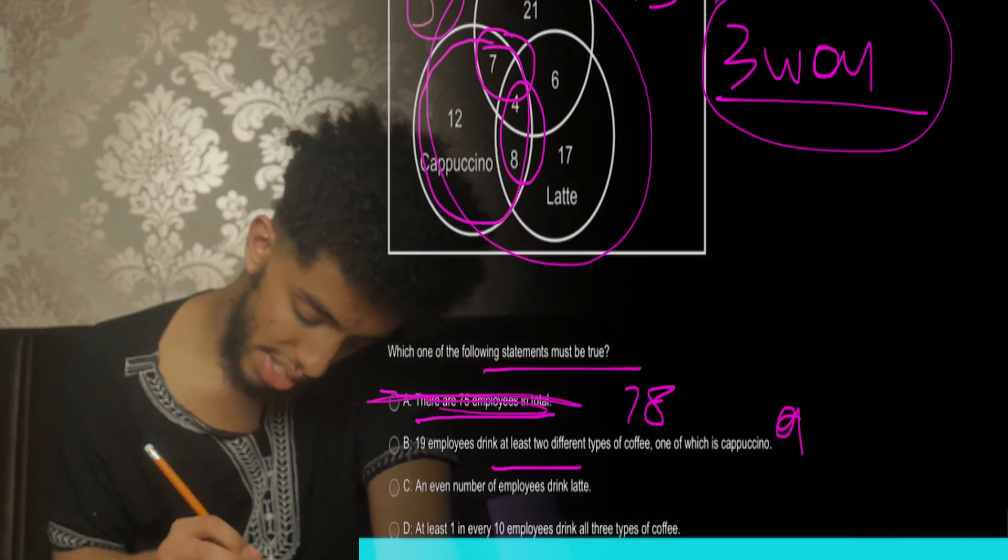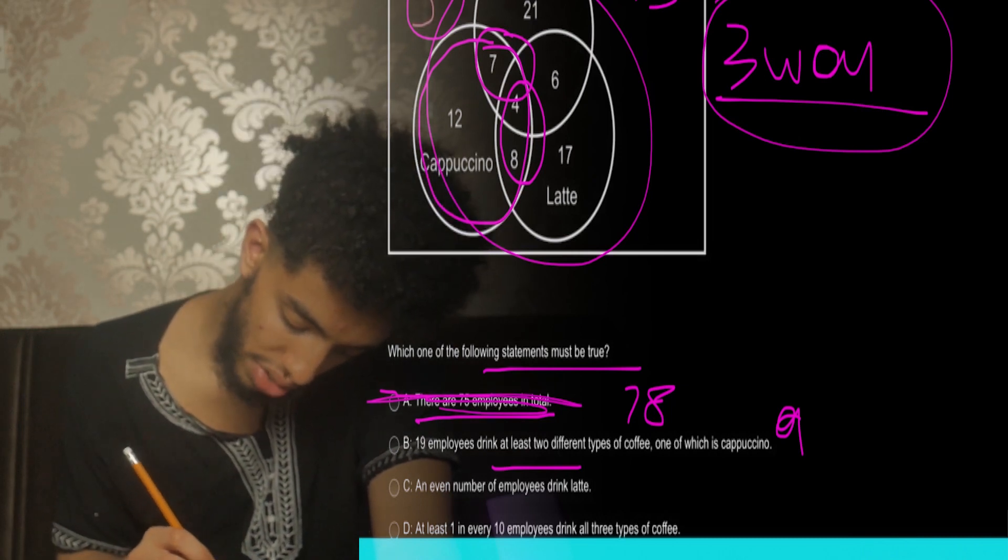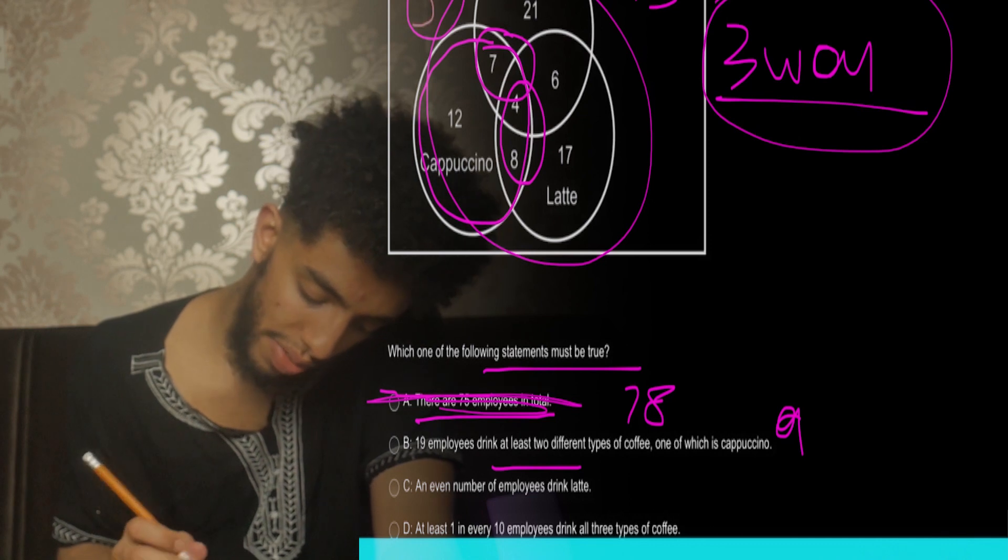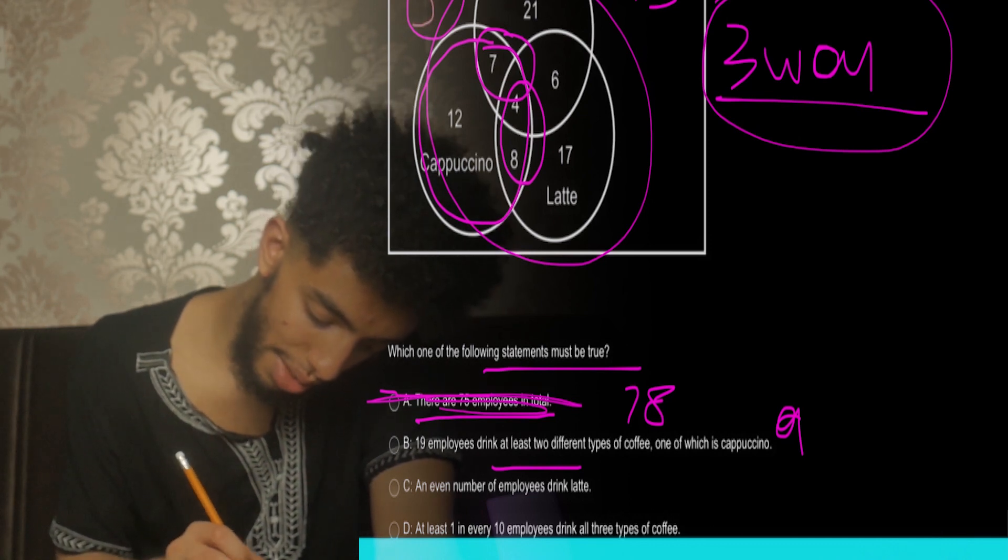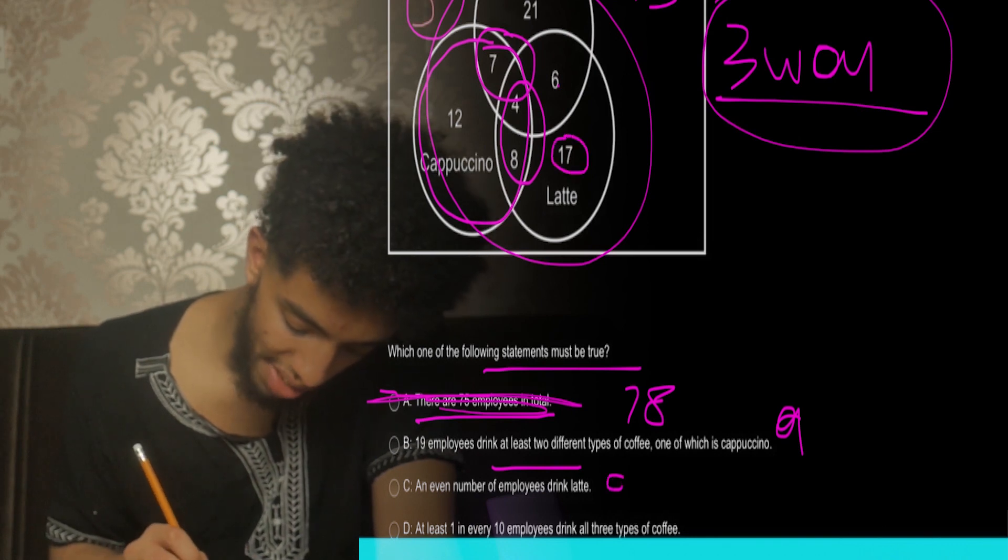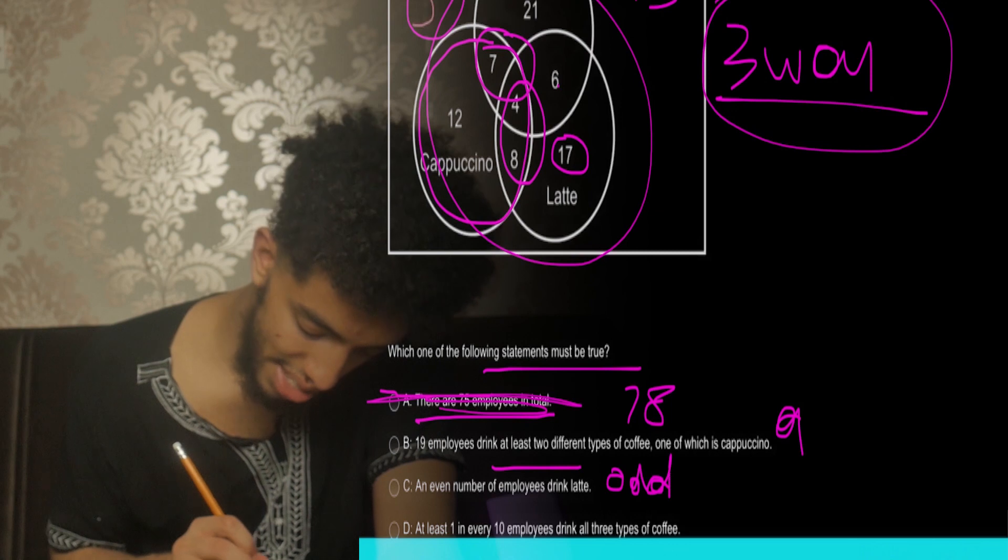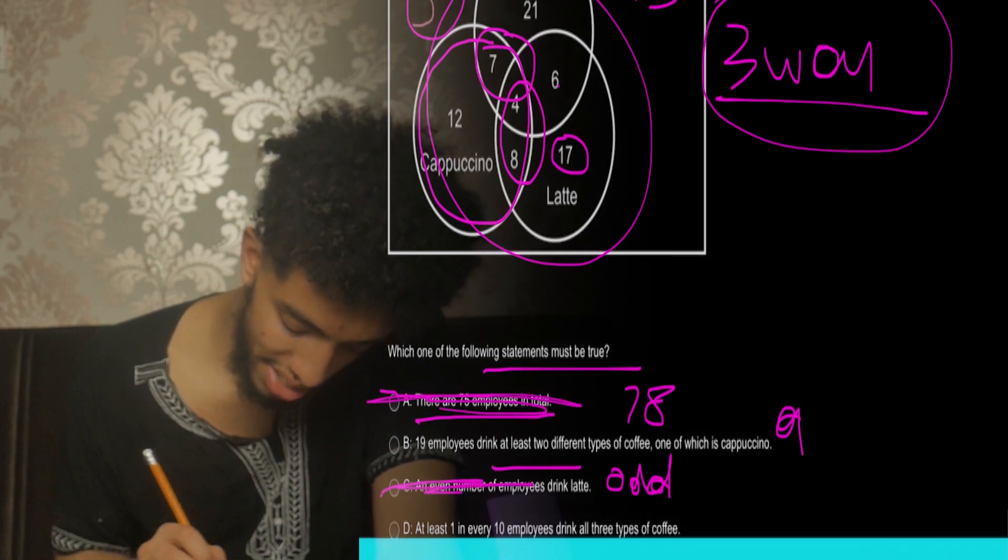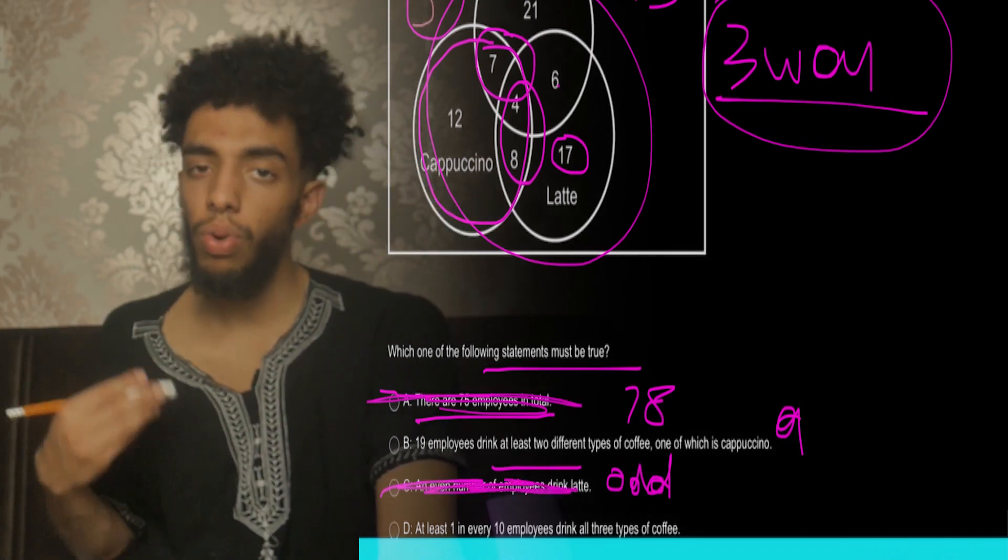An even number of employees drink latte. You'd add the values in here. We know 6 plus 4 plus 8, even numbers, plus 17, odd number. So by default it's going to have to be an odd number, and hence it's not an even number. So that's also incorrect. You sort of find tricks and tips that you get from Medify to really help.